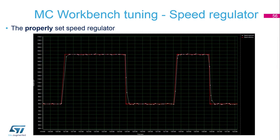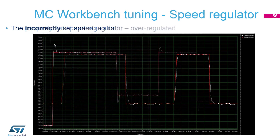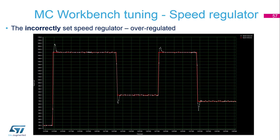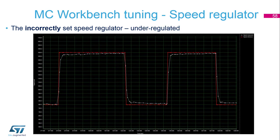This is the setup of a properly set speed regulator. However, if you see artifacts with overshoot and undershoot, this means the regulator is over-regulated — in that case, decrease the KI parameter. If you see under-regulation with no fast reaction and limiting over a long time, you need to increase the KI parameter.